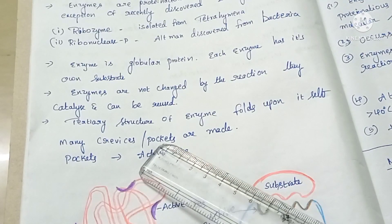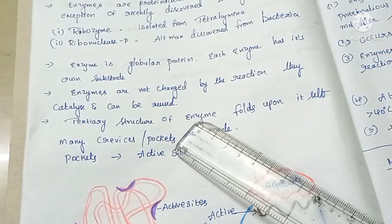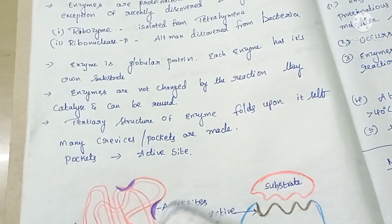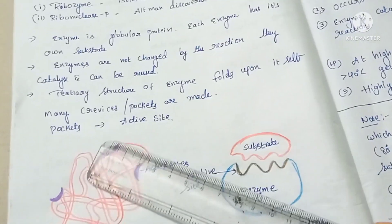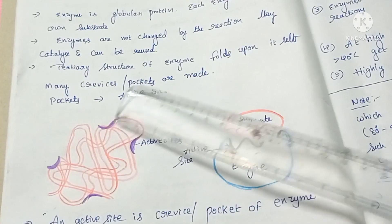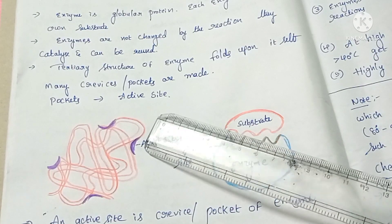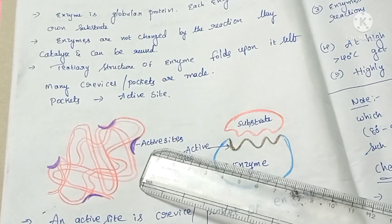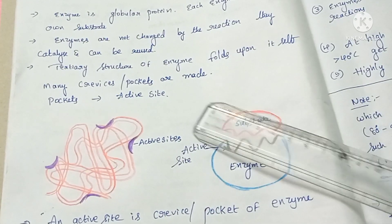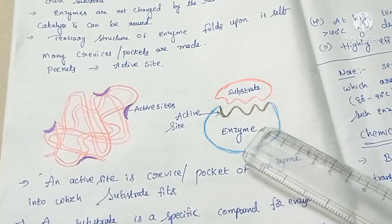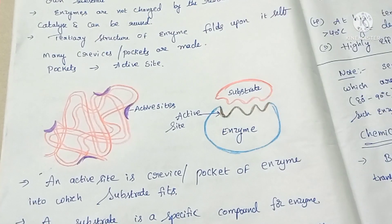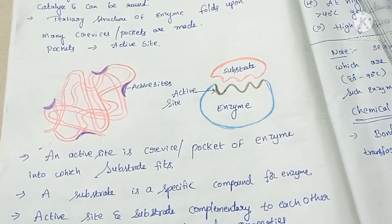Enzymes have a tertiary structure that folds upon itself to form pockets and crevices. This is the tertiary structure of the enzyme — it folds upon itself and forms several crevices and pockets. These pockets and crevices are called active sites. These active sites fit and bind the substrate.